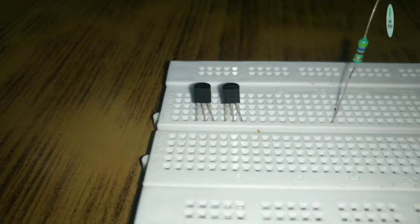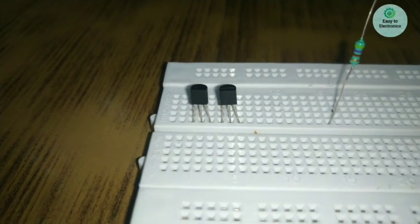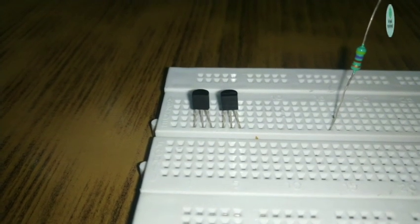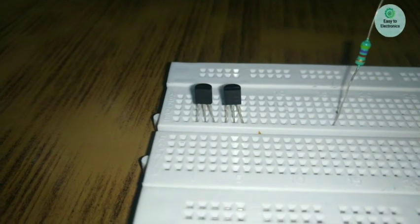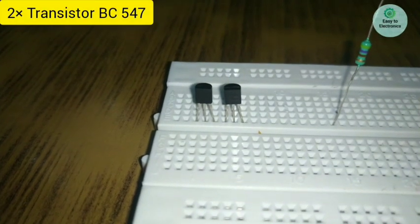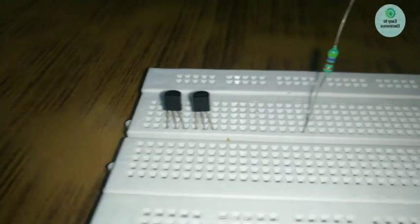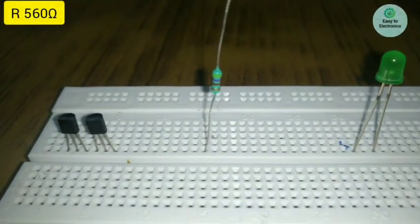Welcome to Easy Electronics. Today we are going to make a touch sensor with transistors, so let's get started. For this you will be needing two transistors BC547, a resistor of 560 ohms, a LED, and some breadboard connectors, a battery, and a connector.